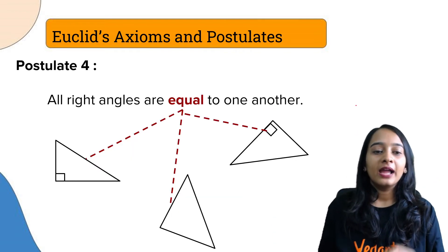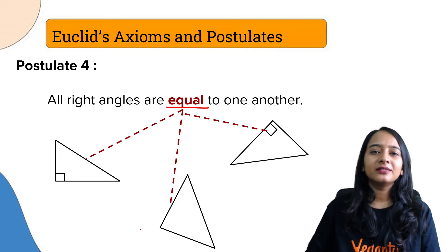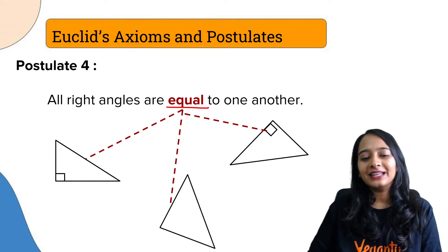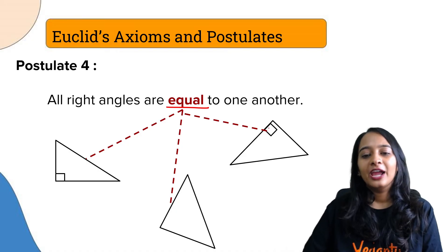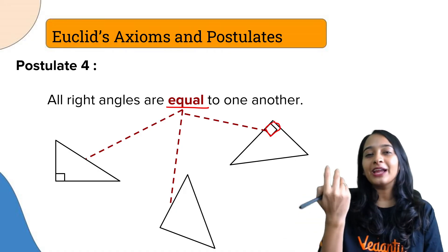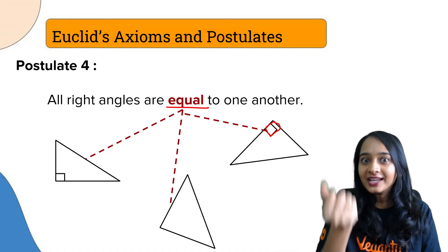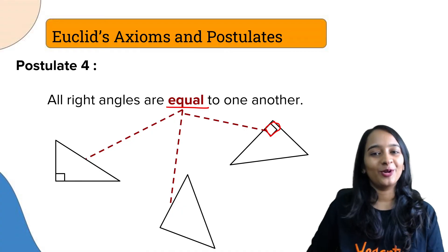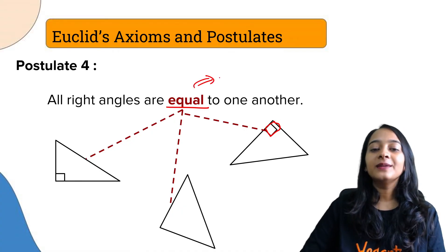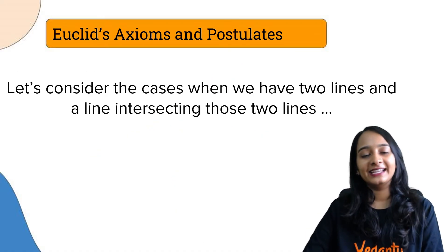Postulate number 4: all right angles are equal to one another. Obviously they will be equal to one another - that is 90 degrees. That is the postulate, the obvious postulate. He made it as a postulate: all right angles are equal to one another because all the values are equal to 90 degrees.